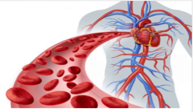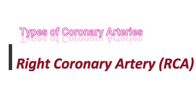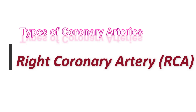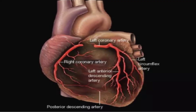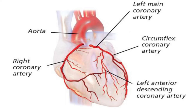Right coronary artery: the RCA supplies blood to your right atrium and right ventricle. Its branches supply the sinoatrial and atrioventricular nodes.